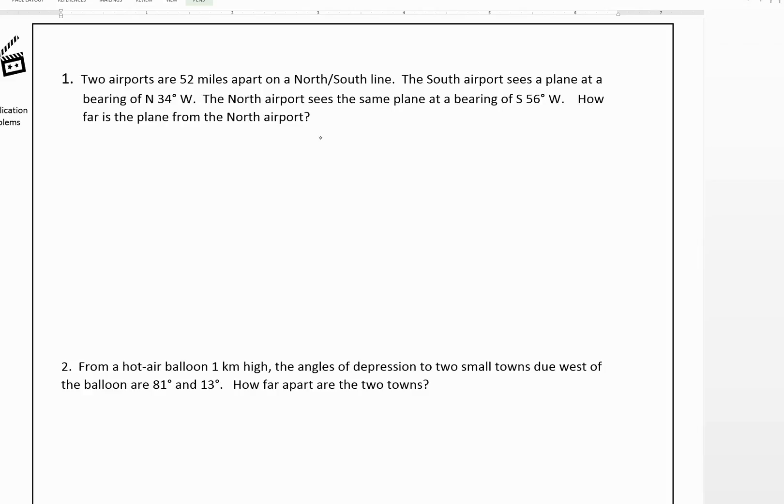Okay, so let's draw what's going on here. If this is our north-south line, we're told that we have two airports. So this would be the north airport, and this would be the south airport. And we're told that they're 52 miles apart.